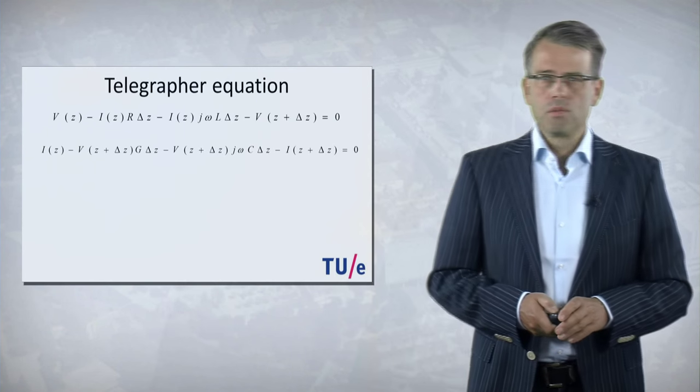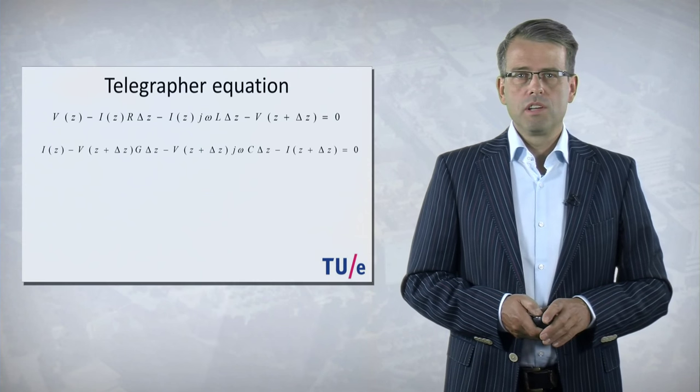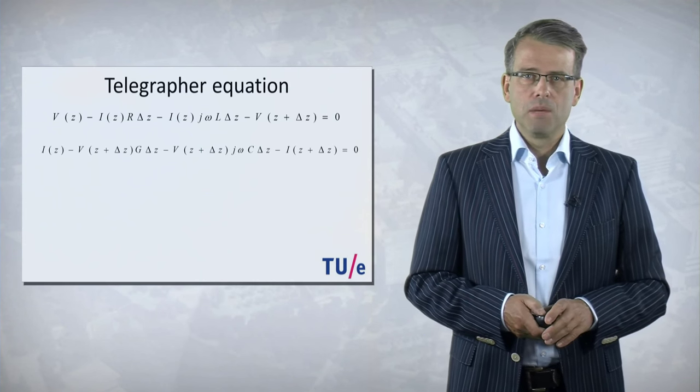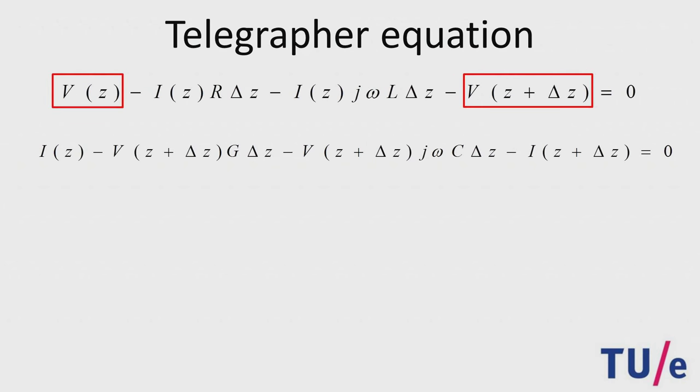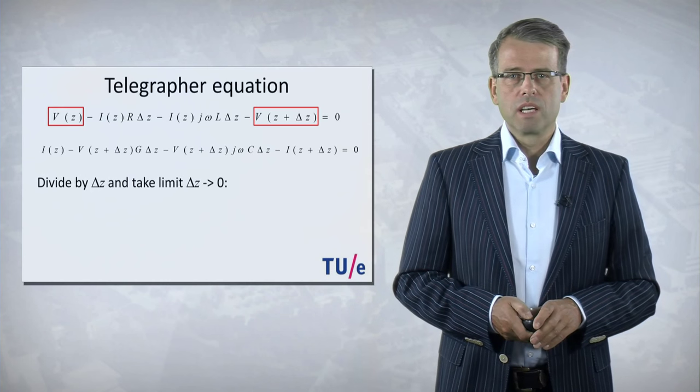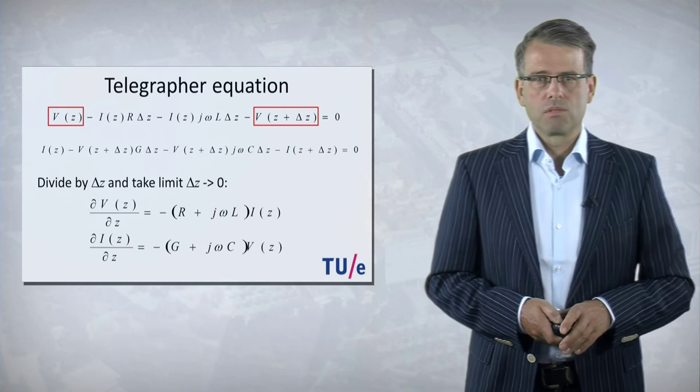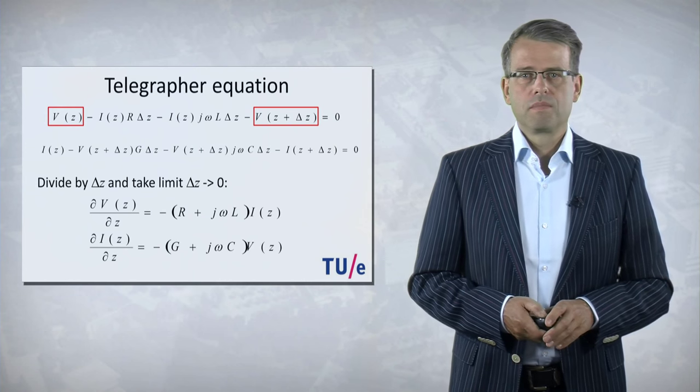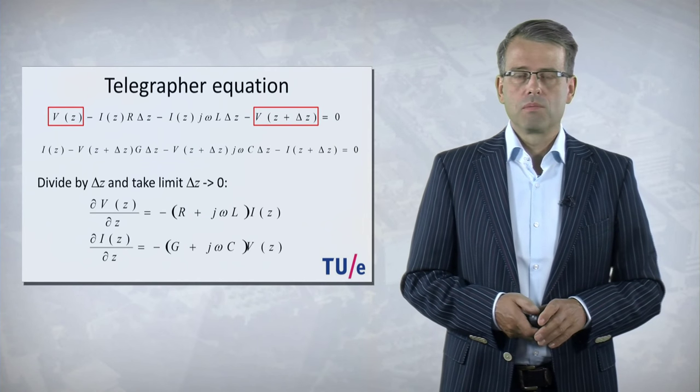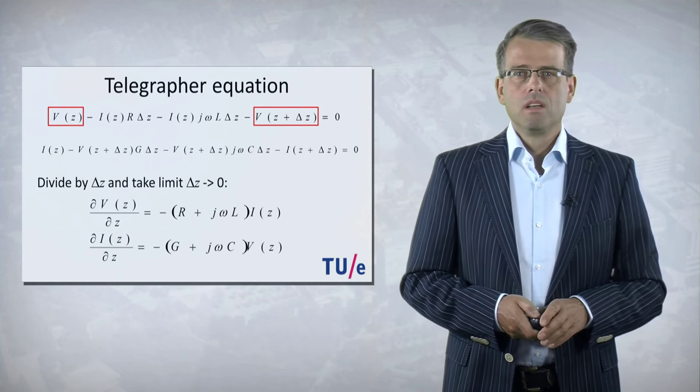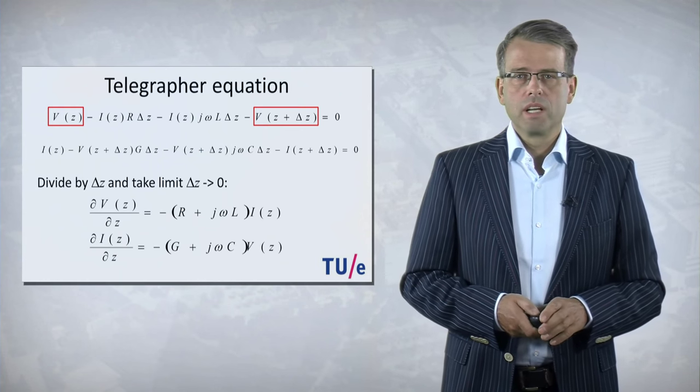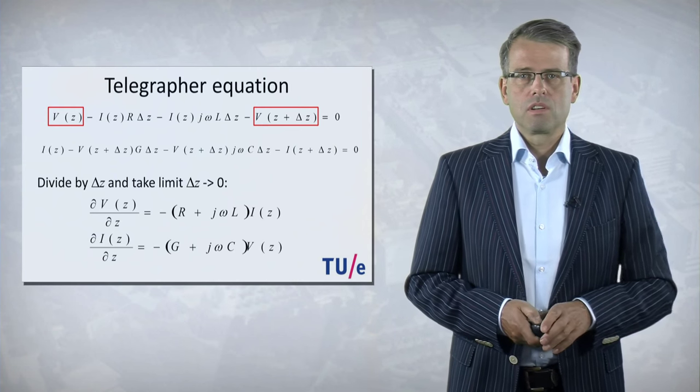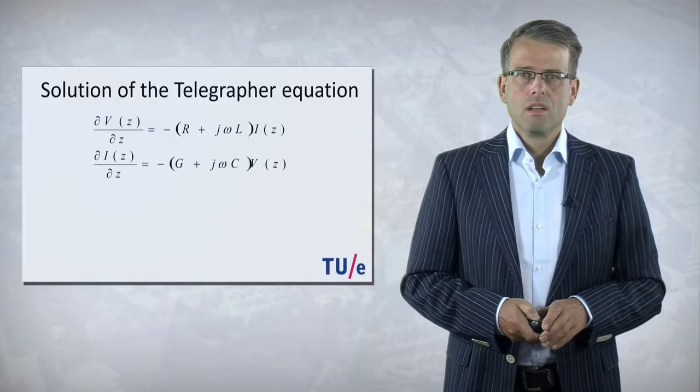So we now have two sets of equations, and in the first equation you recognize the difference between the voltage at the input and the output. If you divide this equation by delta z and assume that delta z is very small, so we take the limit to zero, then you recognize a derivative. And this means that we can rewrite both equations into this set of differential equations where we have two unknowns, the voltage and the current, and we have two equations, so we are able to solve it. Note that we work here in the frequency domain since we assume that all the signals are sinusoidal.